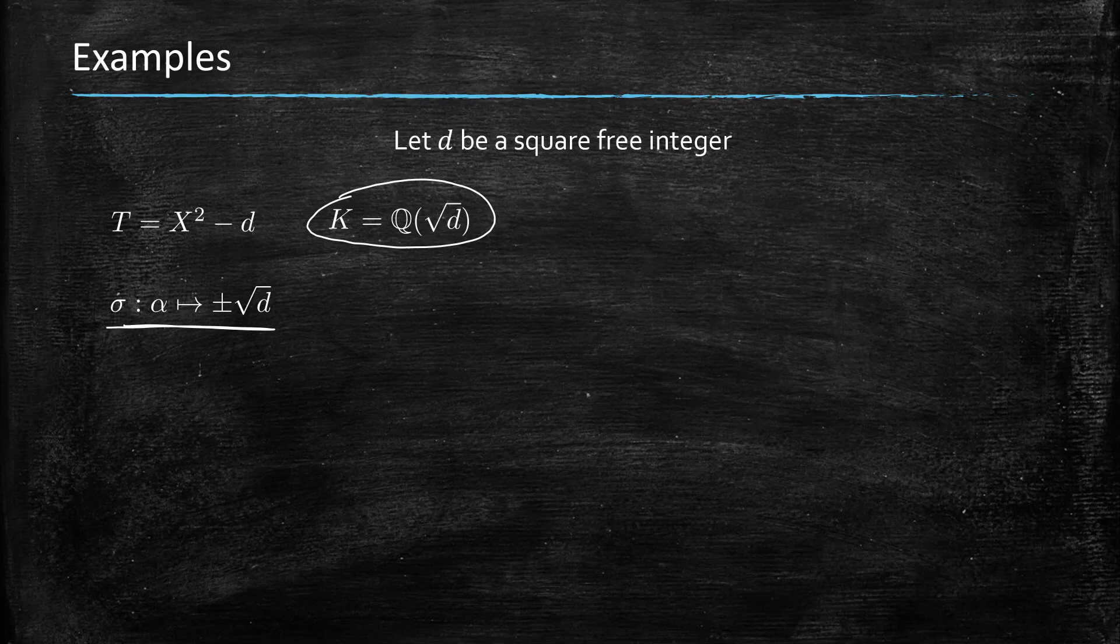And it turns out they're real, so here we have r1 equals 2 and r2 equals 0.